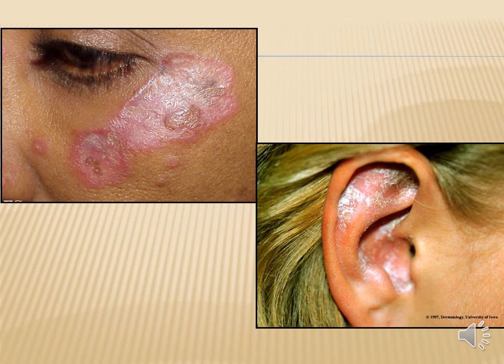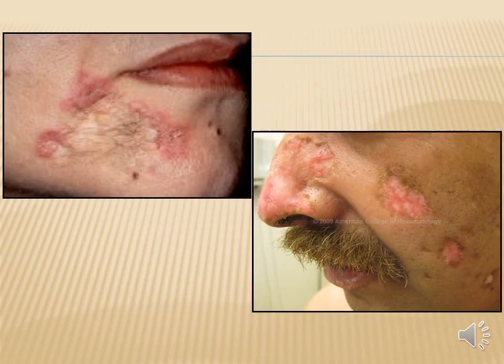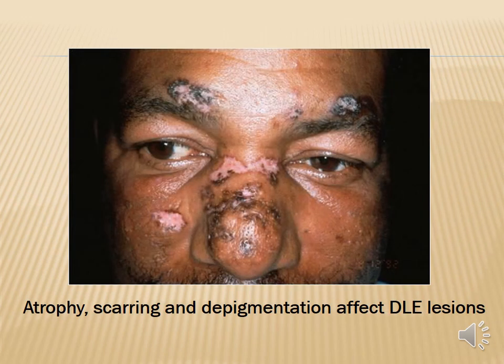Here are the lesions of discoid lupus erythematosus affecting the cheek with central scarring. Another photo shows the scales of the DLE lesions in the ear. Another photo shows the central scarring of the DLE lesion with follicular plugging and atrophy. Additional photos show scarring and dyspigmentation of discoid lupus lesions, as well as atrophy, scarring, and depigmentation affecting DLE lesions above the eyebrows, on the nasal bridge, and above the cheek.